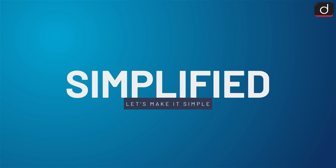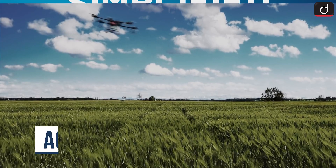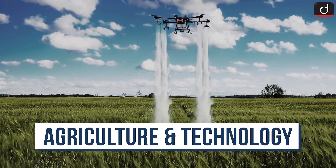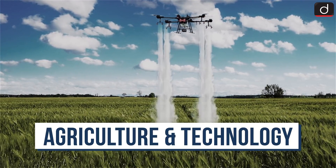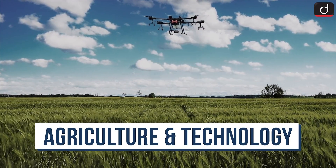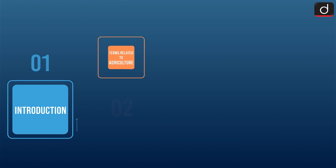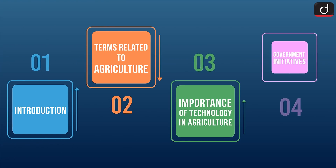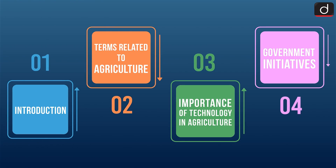Dear viewers, Drishti IAS welcomes you to the new series of Simplified. Today's topic of discussion is Agriculture and Technology. The dimensions we are going to cover are Introduction, Terms Related to Agriculture, Importance of Technology in Agriculture, and Government Initiatives.